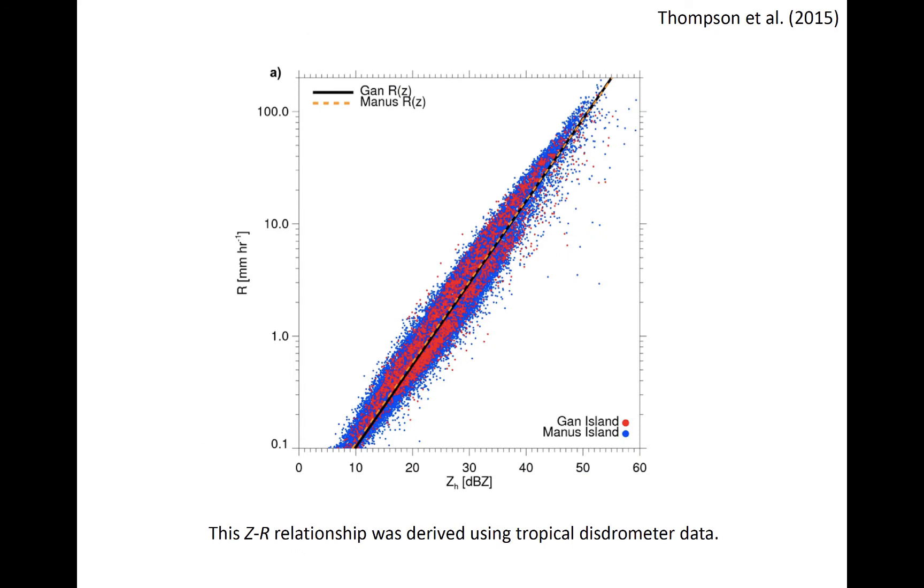This figure illustrates observed rain rate as a function of reflectivity. Both variables were observed by a distrometer or derived from observations from a distrometer, a ground-based instrument that directly measures the drop size distribution.